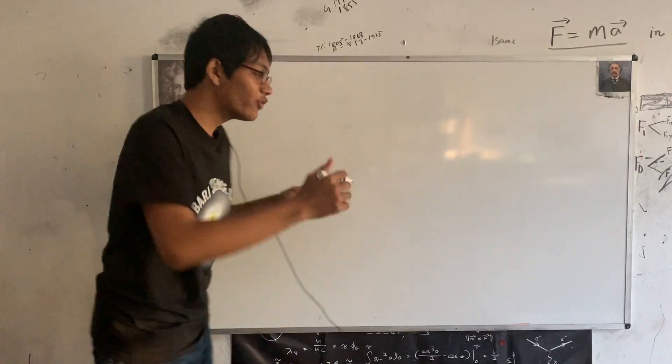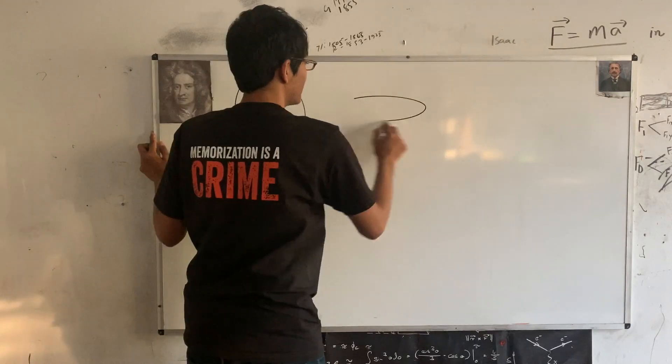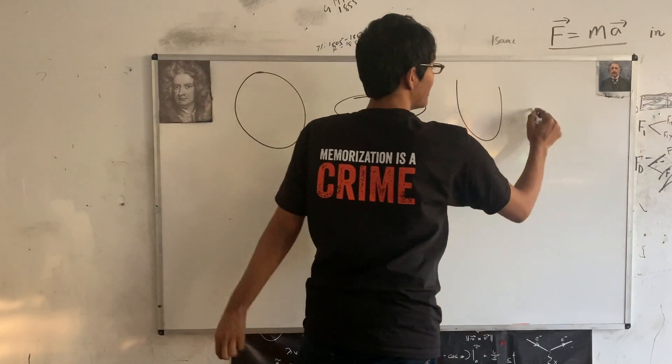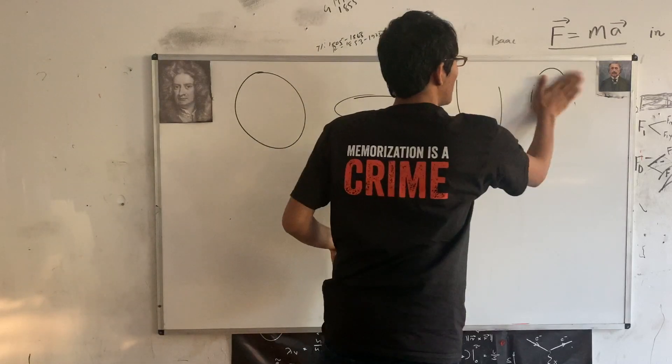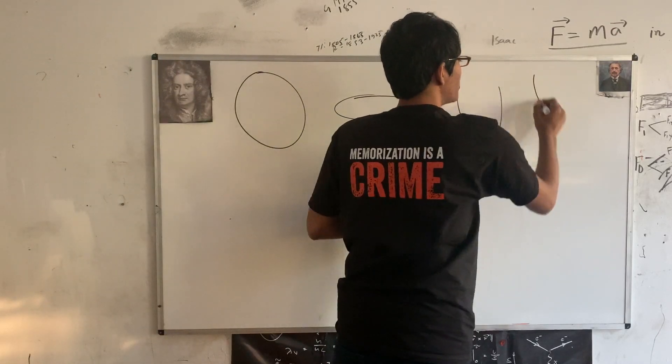The conic sections are four shapes, namely the circle, the ellipse, the parabola, and the hyperbola. And I've already messed one of them up. So these four shapes are everywhere in the world.